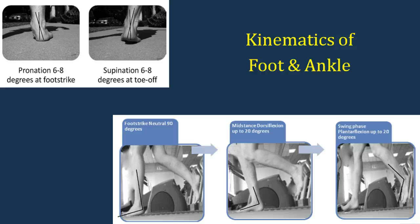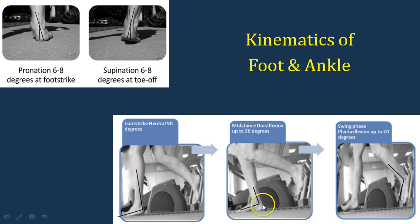Moving on specifically to the kinematics of the foot and ankle: most runners will land on the lateral aspect of the foot in a supinated position. After heel strike, they move into pronation, which should aid in shock absorption — anywhere from 6 to 8 degrees, which is a natural range. Then at toe-off, they move to a locked foot. Dorsiflexion is key here — you need at least 15 to 20 degrees of dorsiflexion in the mid-stance position.